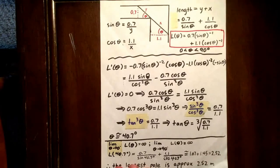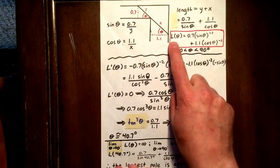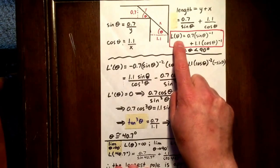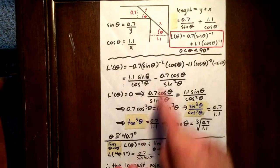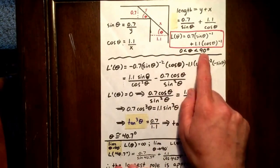So we have our length of our pole in terms of theta given by this expression. And we know that theta has to range somewhere between 0 and 90 degrees.